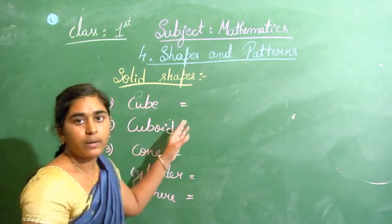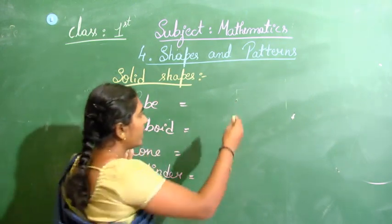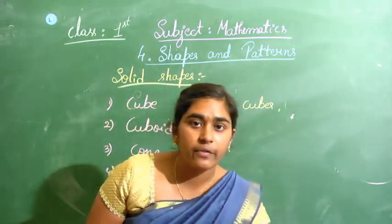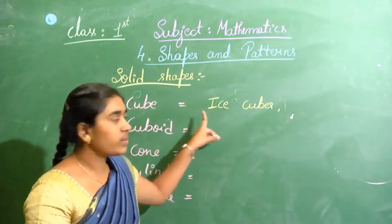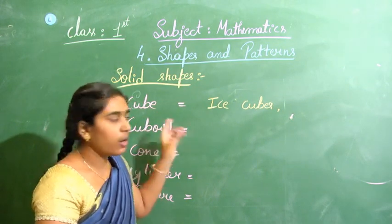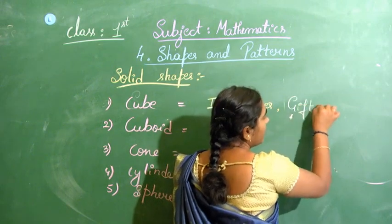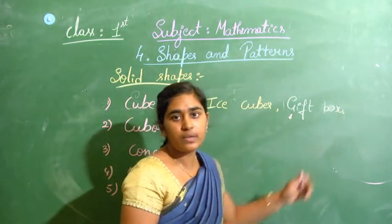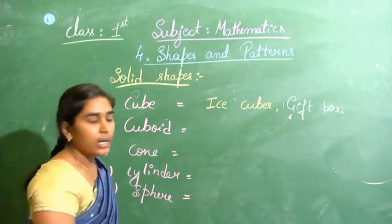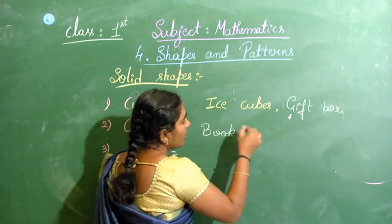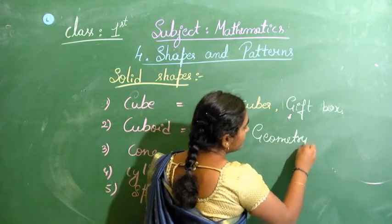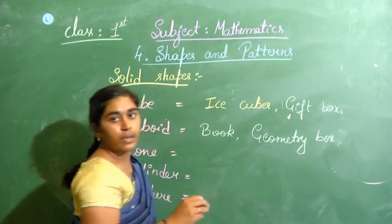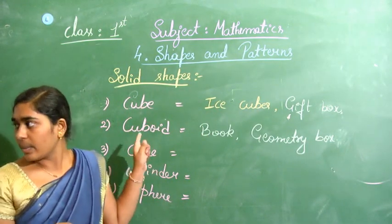Now let's give examples. For cube: ice cubes from your refrigerator are in the shape of a cube, or a gift box is also in the shape of a cube. For cuboid: you can give the example of a book or a geometry box — both look like a cuboid.